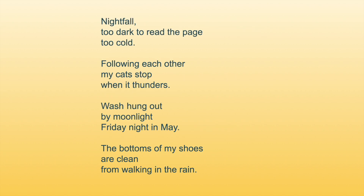Jack Kerouac's American haiku include more instances in which man-made things intrude on or collide with the natural world in some way. These haiku rarely follow the 17-syllable 5-7-5 pattern, but they do create vivid images and invite readers to participate in the making of meaning.